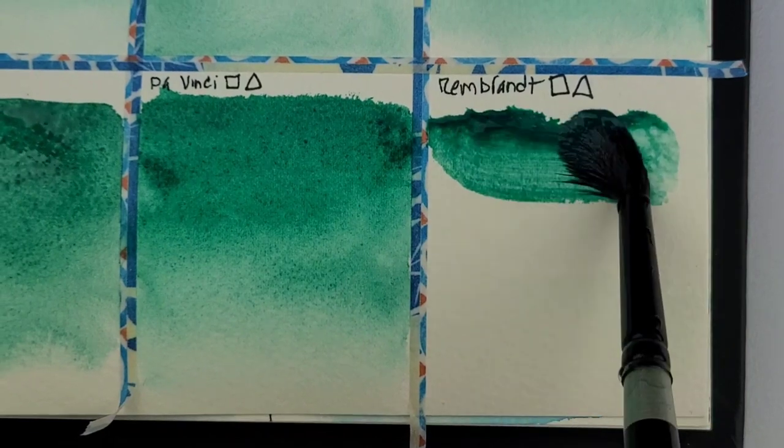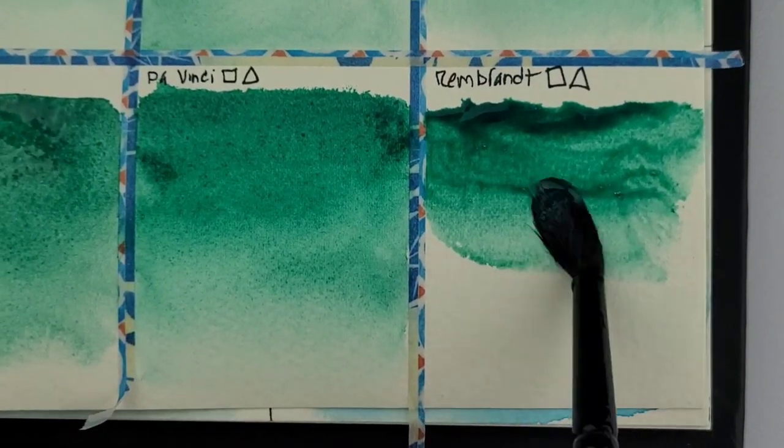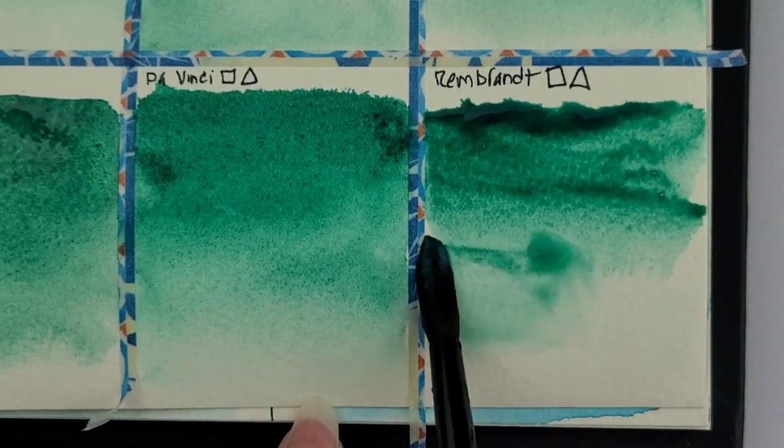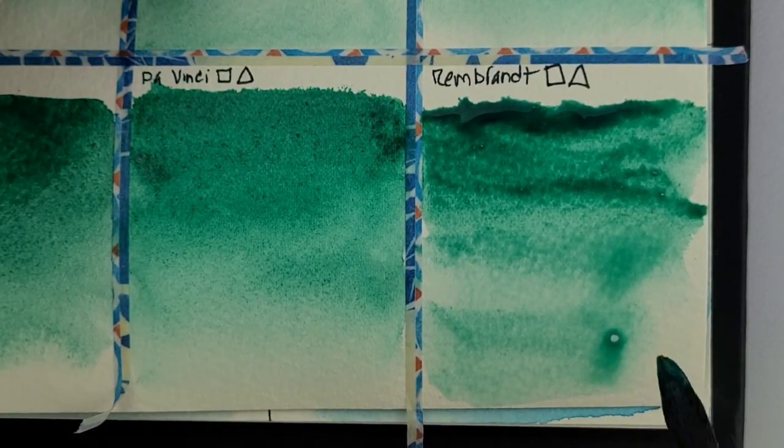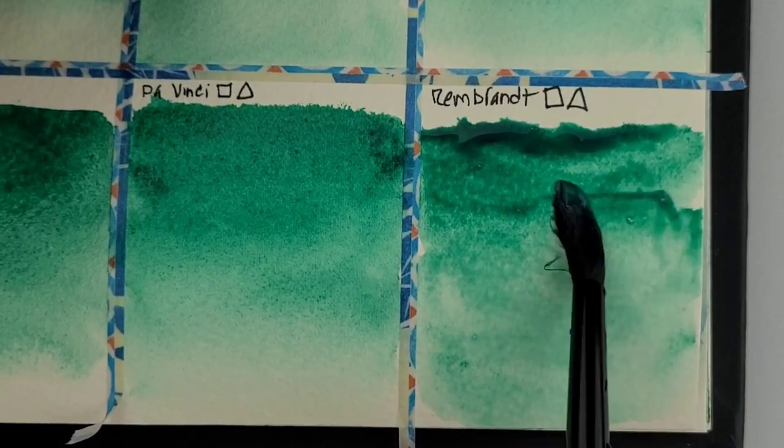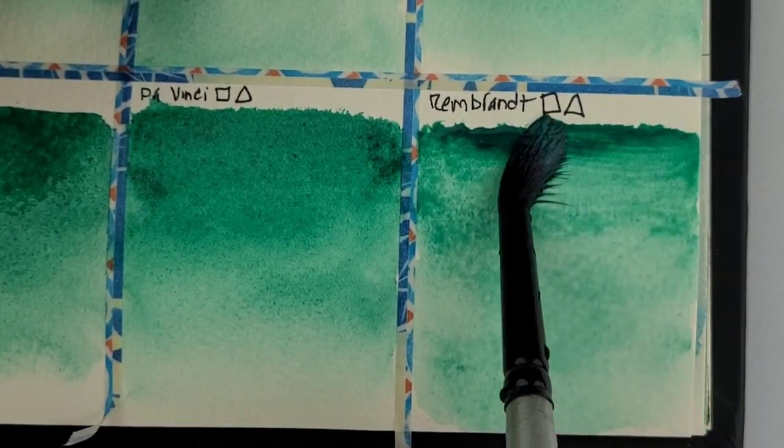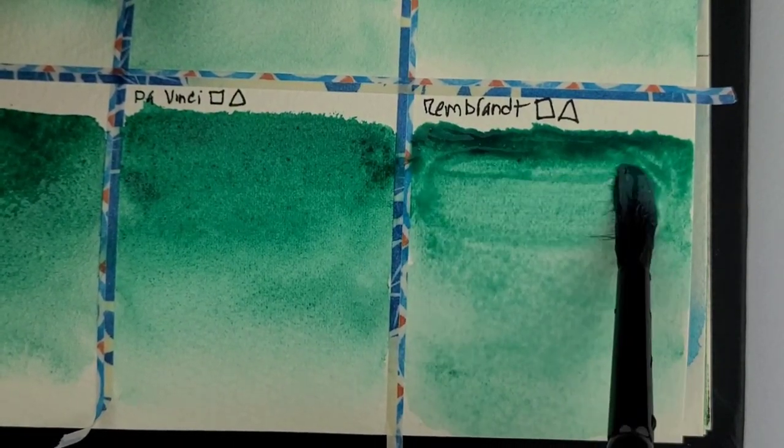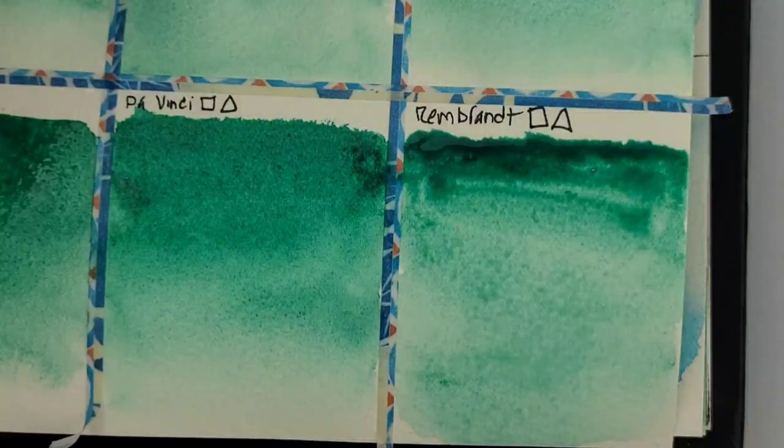And I really wasn't happy with Schmincke either. It also had light binder issues. So I'll still use Schmincke, but it's definitely not like in my top five. So you can see I'm still working on Rembrandt. I had to go back when the camera was off and lift some of that color on the top because it was just so full of binder. It would have never dried.